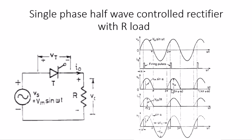The voltage stays at zero until the next alpha value. This continues for the next 2π and 4π values. The current output, based upon the voltage, does the same thing. The same waveform seen in the voltage output is also followed by the current output — so there are the same waveforms for both voltage output and current output.